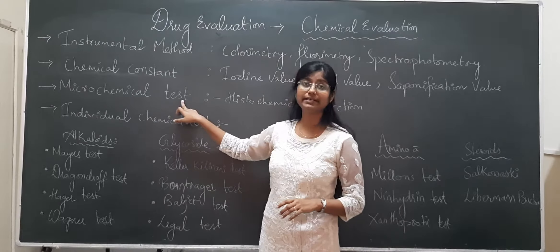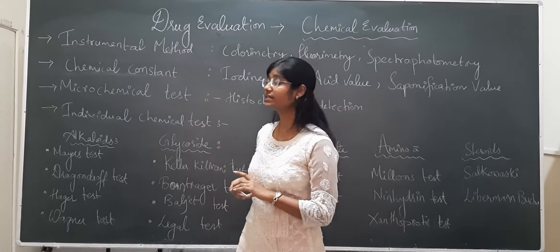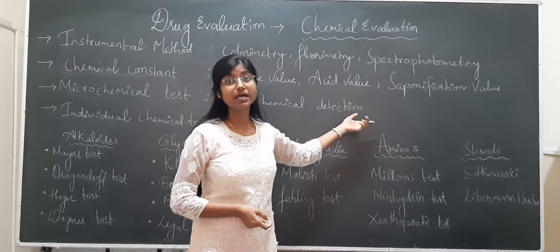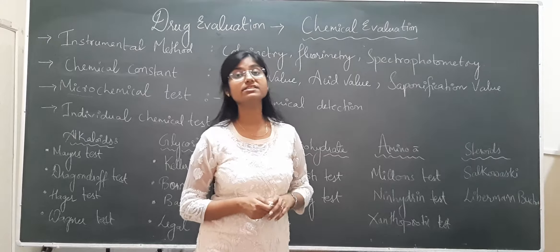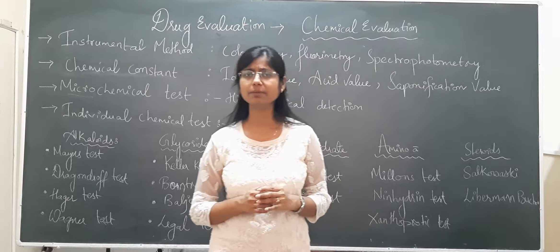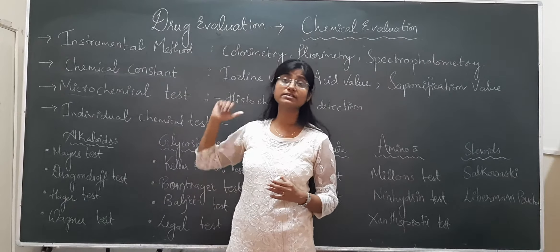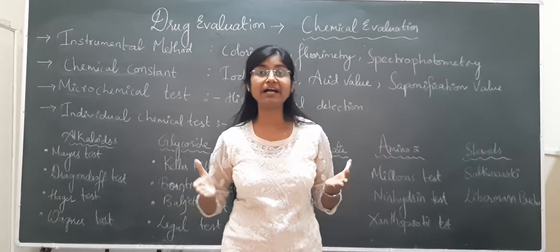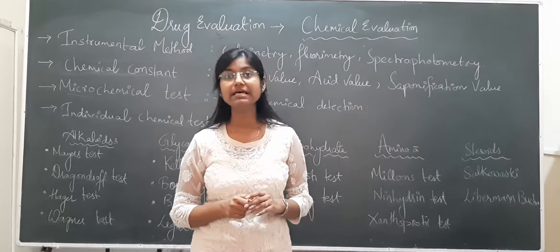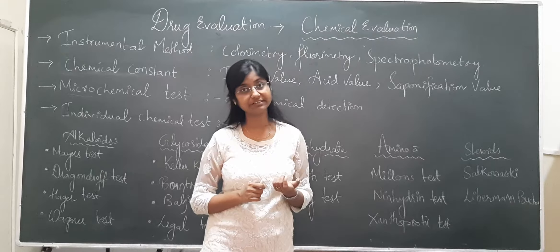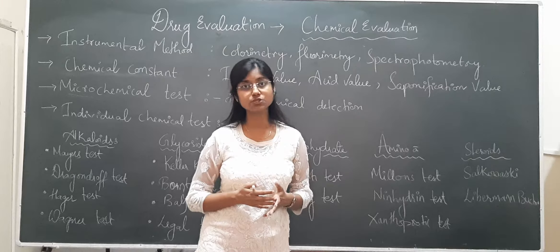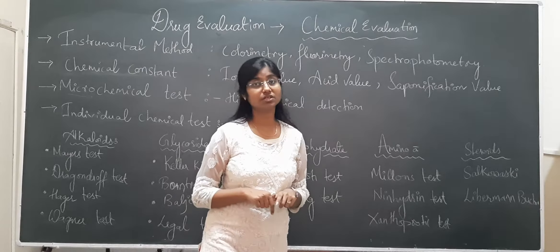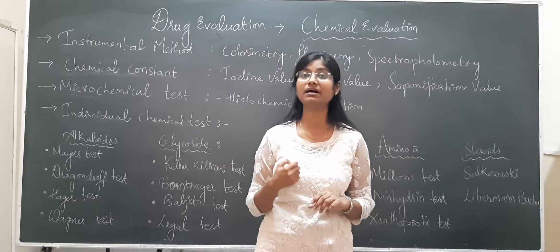Coming to the third point: microchemical test. The word 'micro' means it uses microscopic studies. Under microchemical test comes histochemical detection. For example, starch gives a blue-black color with iodine — a very basic test. In microchemical testing, iodine is put onto the organ, and wherever starch is present in the plant's transverse section, a blue-black color appears. Similarly, aleurone grains give a brownish color. Phloem and xylem colors depend upon the constituents.